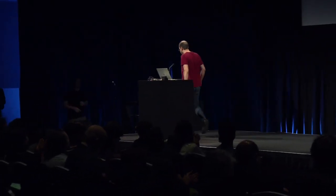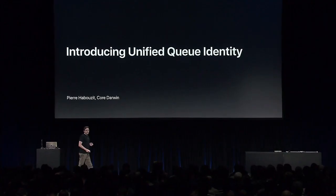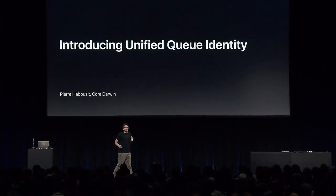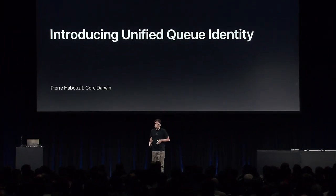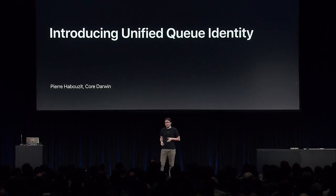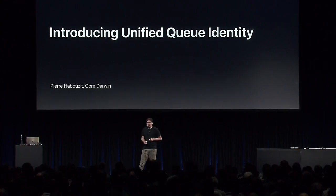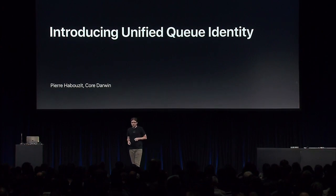We have completely reinvented the internals of GCD this year to eliminate unwanted context switches and execute single queue hierarchies on a single thread. To do so, we created a new kernel concept called unified queue identity. This part of the talk will focus on a single queue hierarchy, with sources at the top and your mutual exclusion context at the bottom.